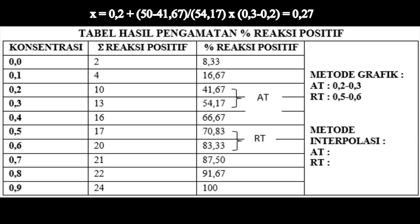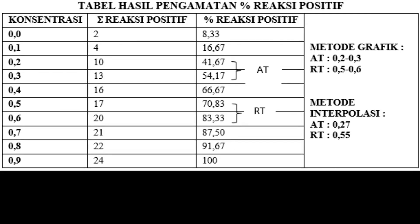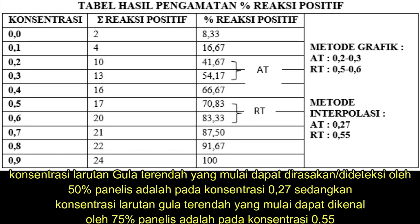Lakukan hal yang sama untuk mencari RT dengan ketentuan 75%. Dari data ini, kita dapat menarik kesimpulan bahwa konsentrasi larutan gula terendah yang mulai dapat dirasakan atau dideteksi oleh 50% panelis adalah pada konsentrasi 0,27. Sedangkan, konsentrasi larutan gula terendah yang mulai dapat dikenal oleh 75% panelis adalah pada konsentrasi 0,55.